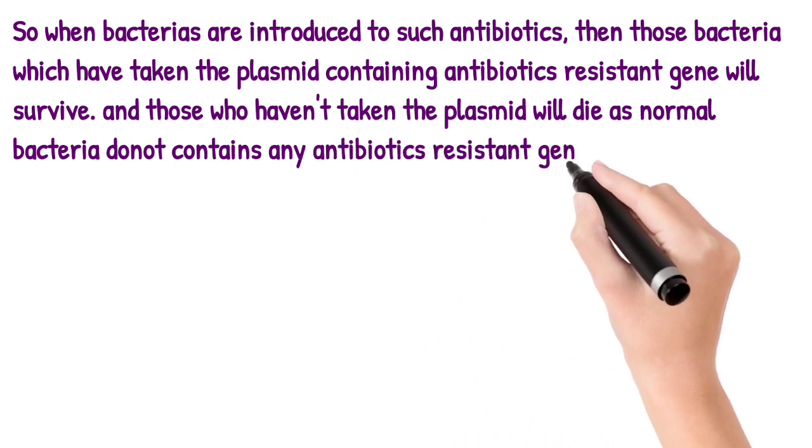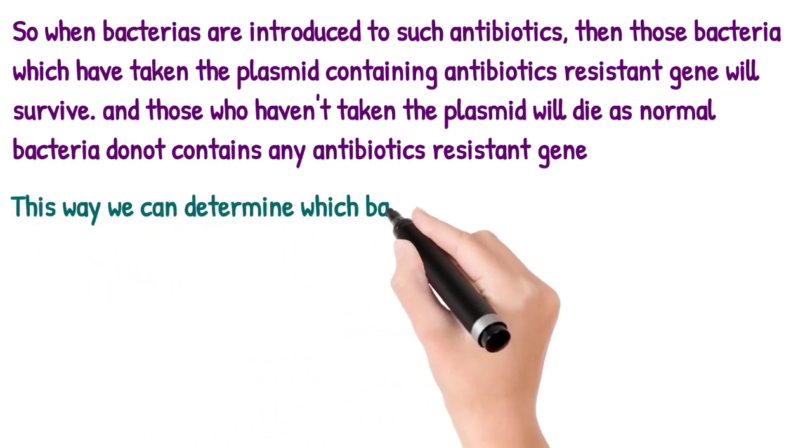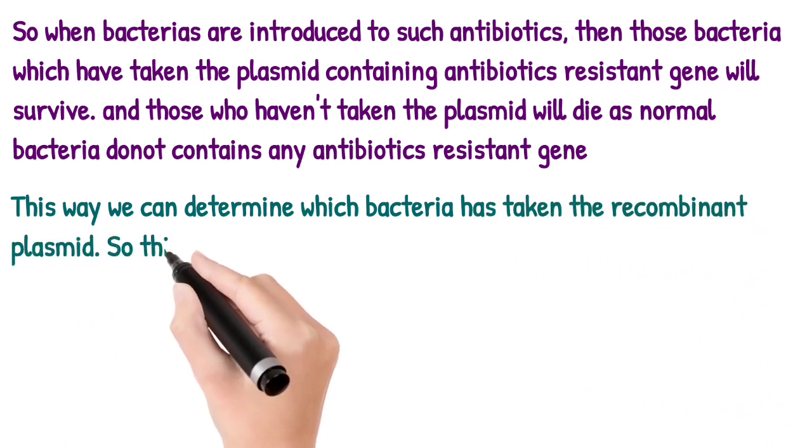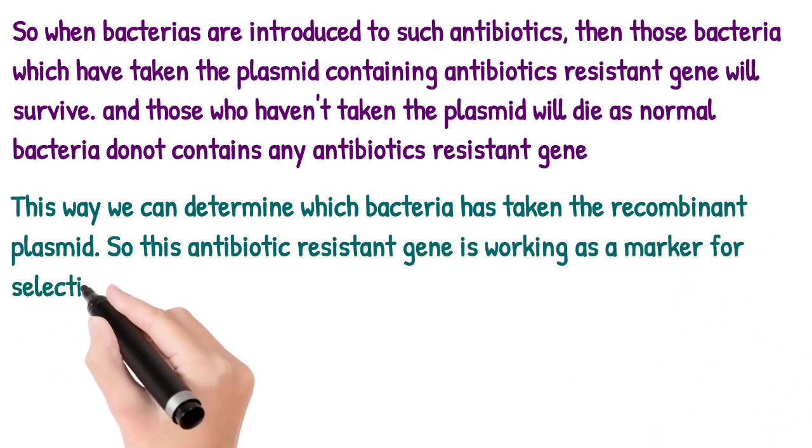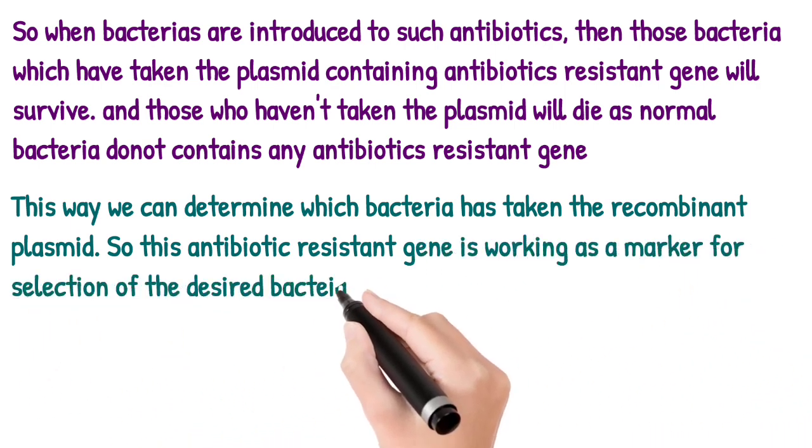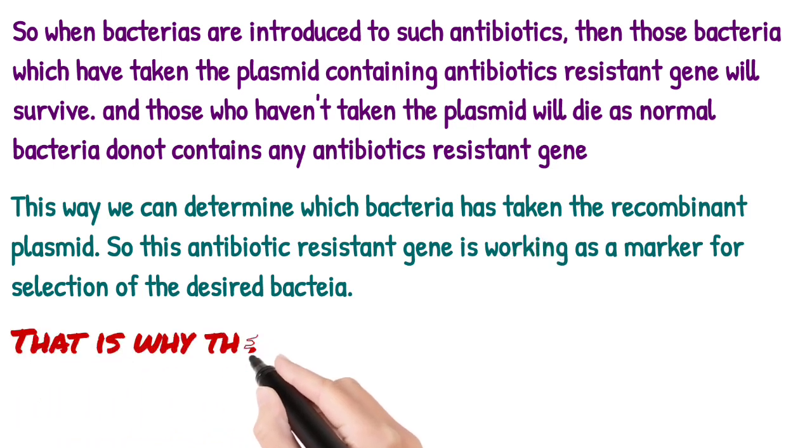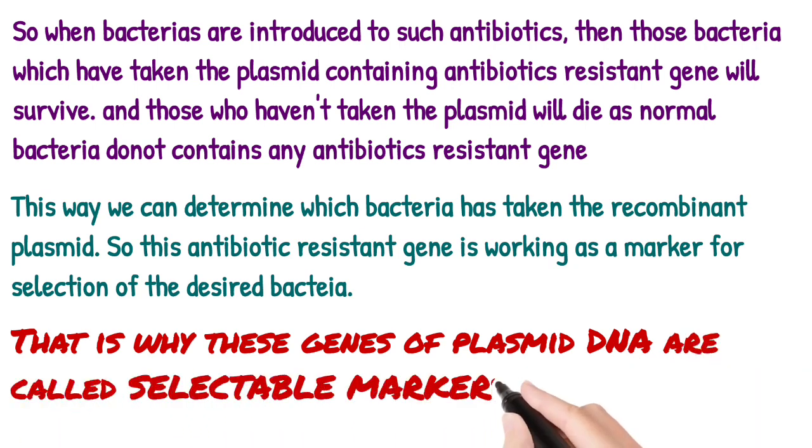As normal bacteria do not contain any antibiotic resistant gene, this way we can determine which bacteria has taken the recombinant plasmid and which has not. So this antibiotic resistance gene is working as a marker for selection of the desired bacteria. That is why these genes of plasmid DNA are called selectable marker.